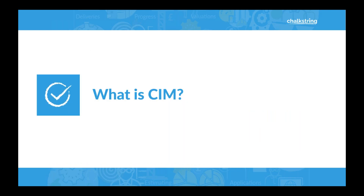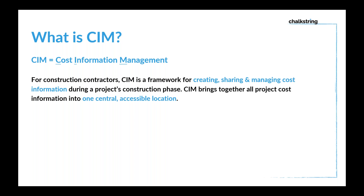So let's start with: what is CIM? There are a lot of acronyms around these days, so what does CIM actually mean? It stands for Cost Information Management. Really, CIM is a framework to enable contractors to create, share, and manage cost data — specifically during the construction phase of a project. This is everything from cradle to grave, starting with estimating or pricing the project right through to final account. It's the whole end-to-end solution, about creating and managing cost data stored in one accessible, central location.